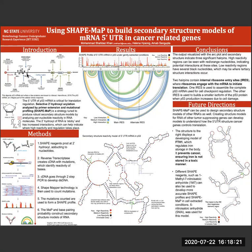ShapeMap allows us to measure the per-nucleotide reactivity in RNA. This works by taking advantage of the 2' prime hydroxyl group on RNA, which is easy for molecules to interact with. Shape reagents poke at and adduct to these nucleotides, indicating where high reactivity and regulation occurs.